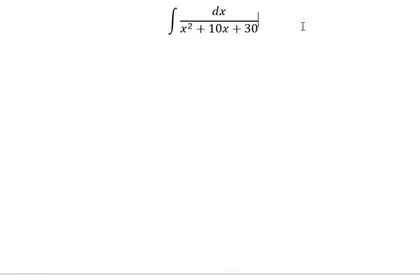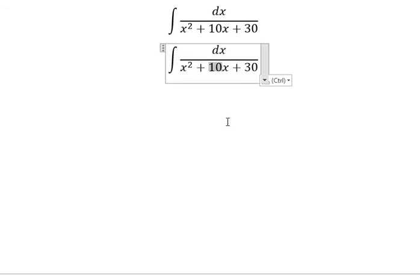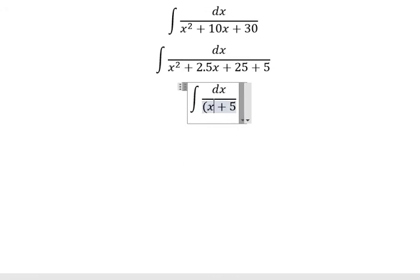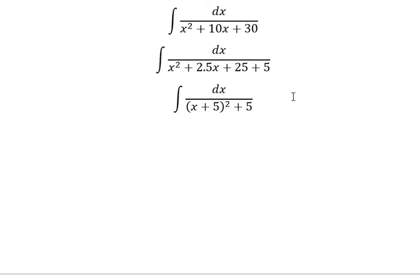For the 10x term, we can divide it into 2 multiplied by 5 because we have a 5 here. So we write 25 plus 5. For this one we can write it as (x + 5)². Now we need to use integration by trigonometric substitution.